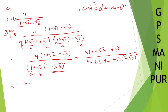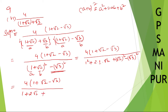Now substituting: 1 squared is 1, plus 2 into 1 is 2 root 2, plus root 2 squared is 2, minus root 3 squared is 3. So denominator becomes 1 plus 2 root 2 plus 2 minus 3, which simplifies to 2 minus 3 plus 1 = 0... the constants cancel: 1 plus 2 minus 3 = 0.